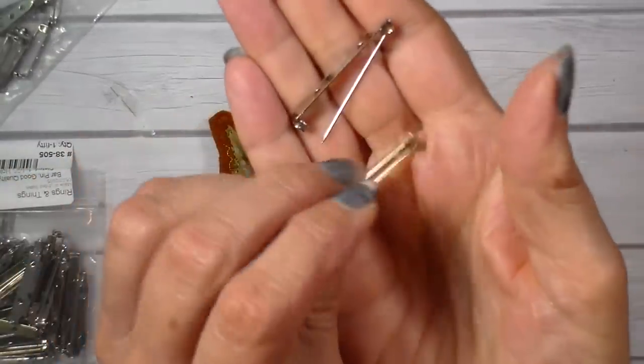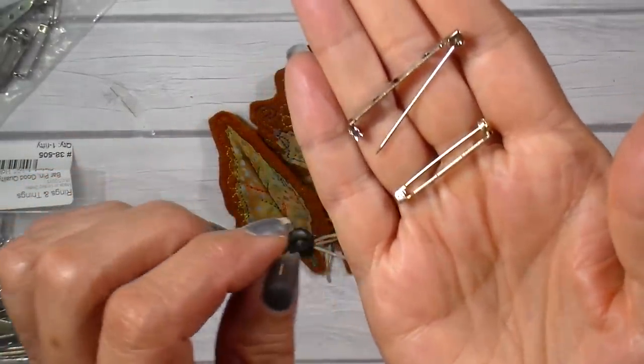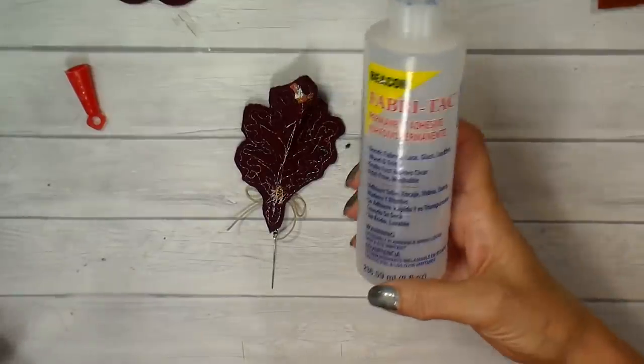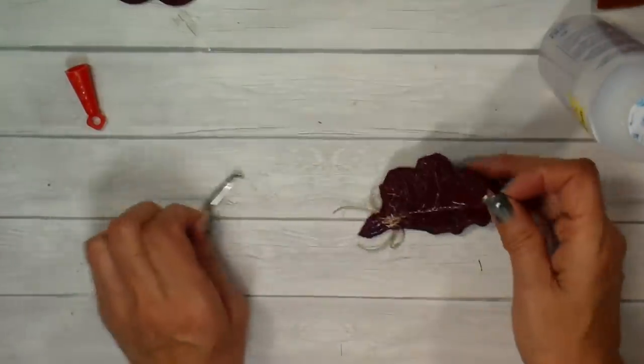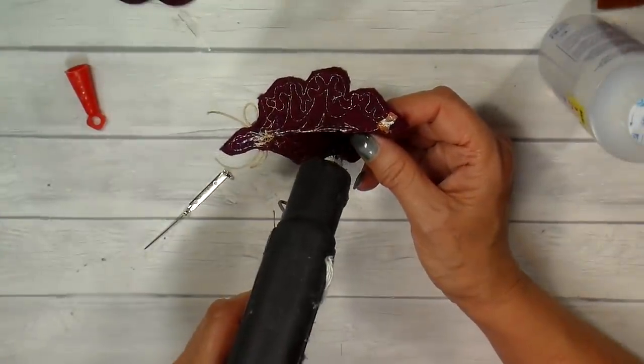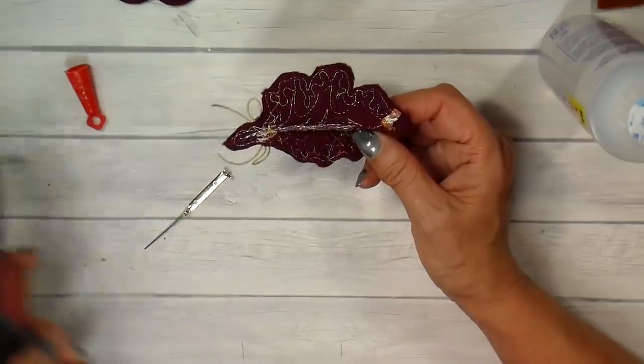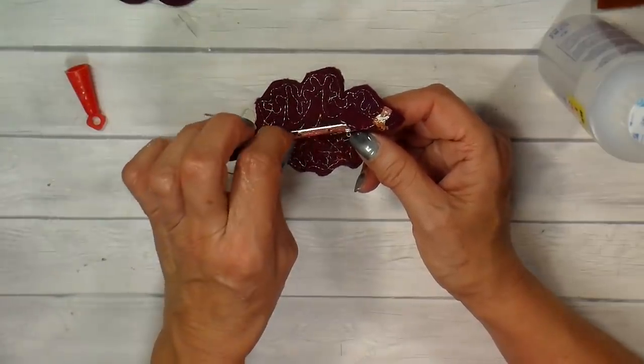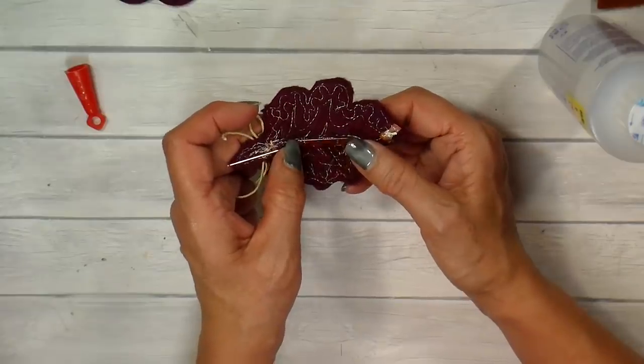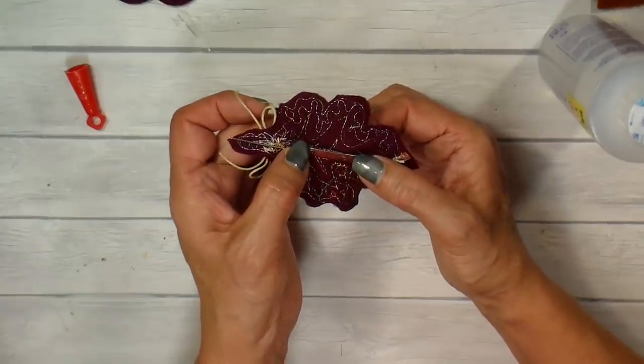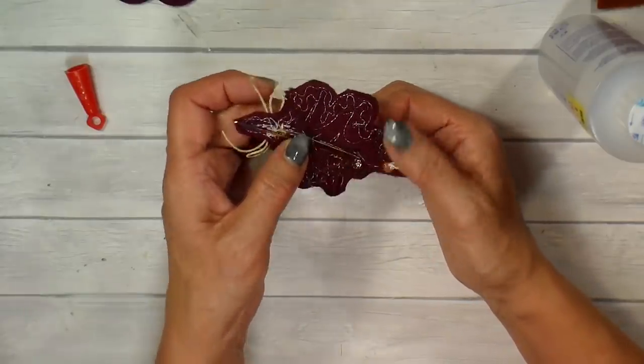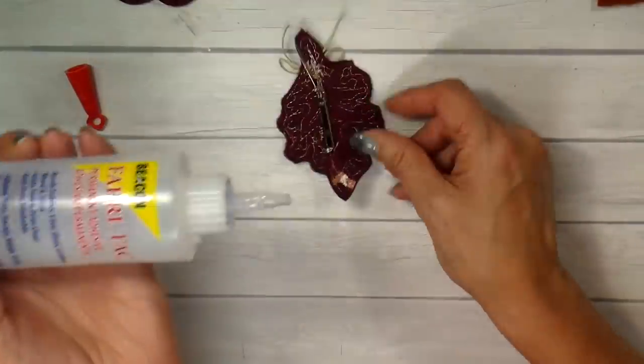I use a one and a half inch pin back and this is a really high quality pin back that I get from Rings and Things. I love these pin backs because they do not snag. They just work really well for my projects. And I'm using a hot glue gun and I'm gluing that right on top of that little tuck that I made.